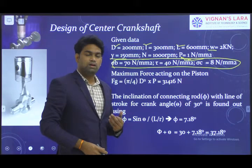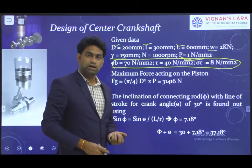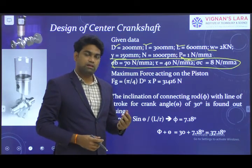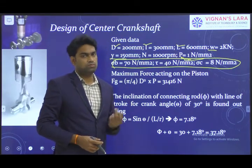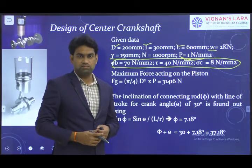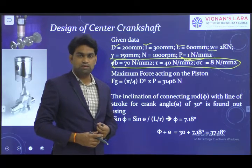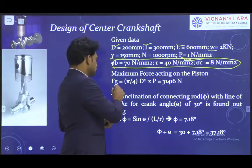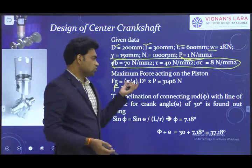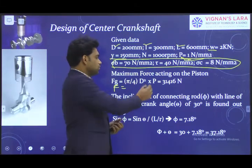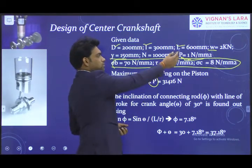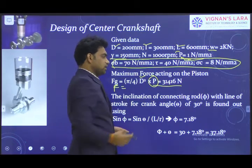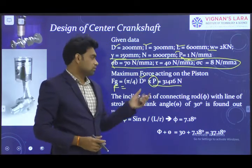Before finding the main dimensions of the crankshaft, we need to calculate the radial load and tangential load acting on the connecting rod. For that, we require the maximum gas load, which is Fg = π/4 · D² · Pmax. Since Pmax and D are known, by substituting both values we get the maximum gas load as 31,416 N.